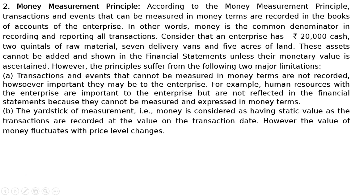However, this principle suffers from two major limitations. First, transactions and events that cannot be measured in money terms are not recorded, however important they may be. For example, human resources are important to an enterprise but are not reflected in financial statements because they cannot be measured in money terms. Second, money is considered as having static value since transactions are recorded at the value on the transaction date, but the value of money fluctuates with price level changes.